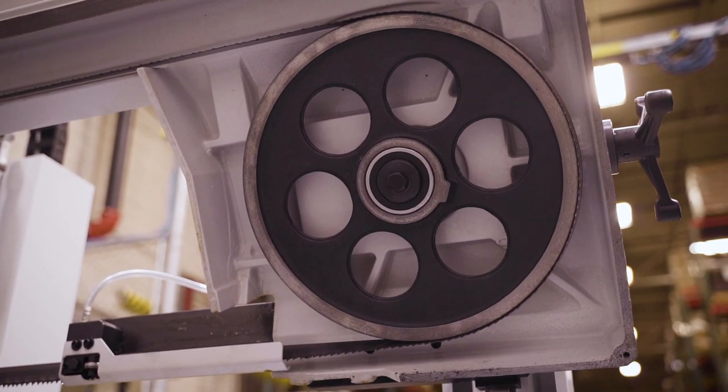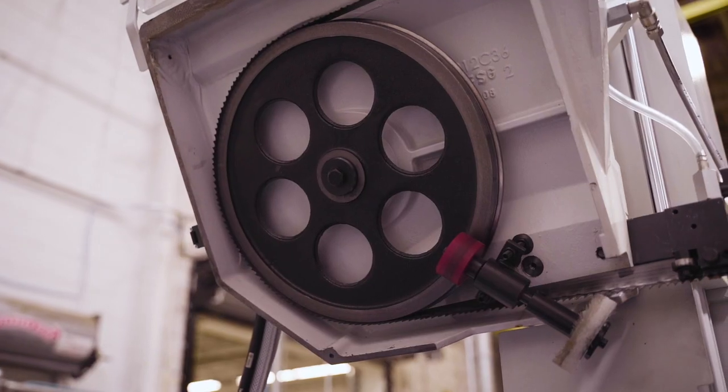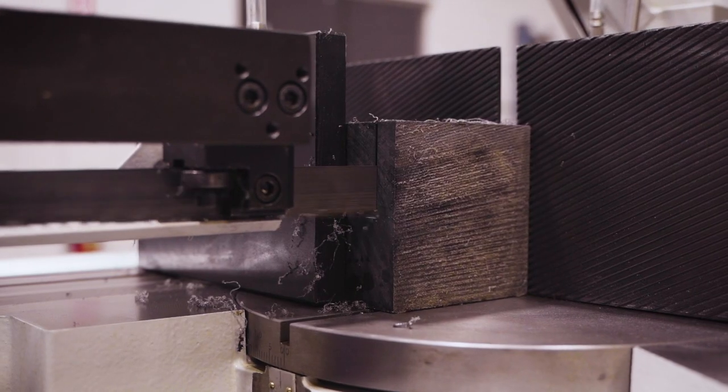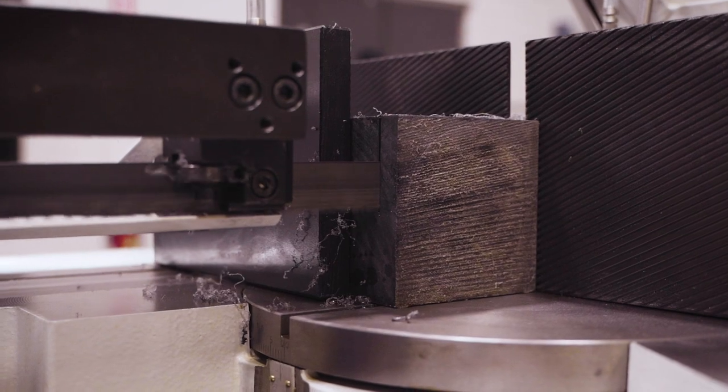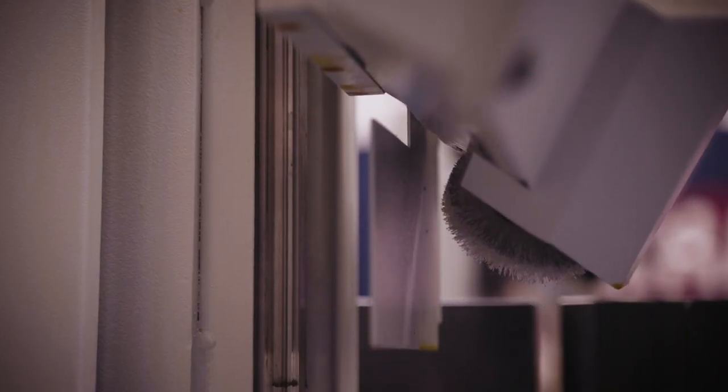With the semi-automatic cutting system, the user can set the blade speed and feed rate and start the cut. Once the cut is complete, the saw will automatically stop the blade and return to a pre-set home position.